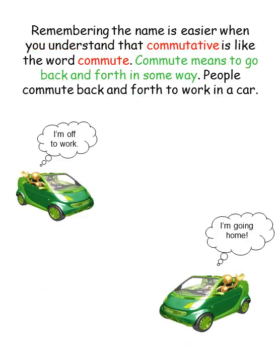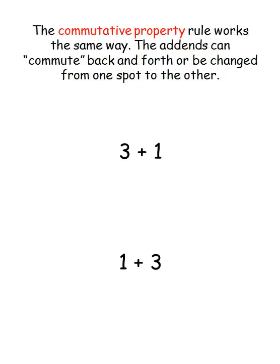Remembering the name is easier when you understand that Commutative is like the word commute. Commute means to go back and forth in some way. People commute back and forth to work in a car. The Commutative Property rule works the same way. The add-ins can commute back and forth, or be changed from one spot to the other.